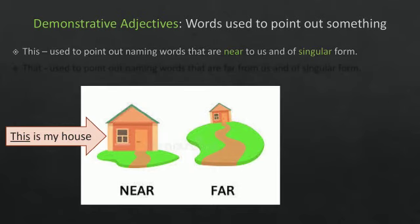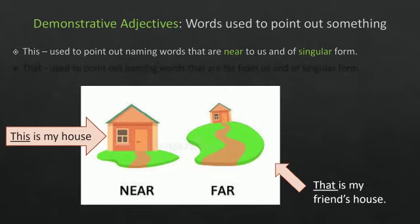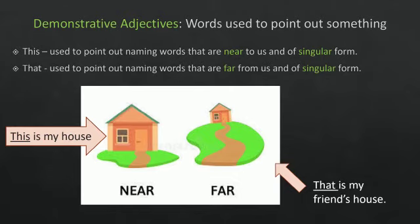This is used to point out naming words that are near to us and of singular form. The other house is far from us. So, we write it as that is my friend's house. That is used to point out naming words that are far from us and of singular form.